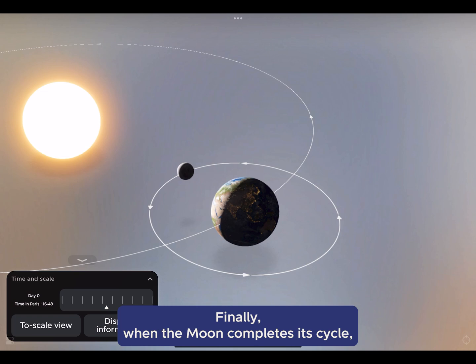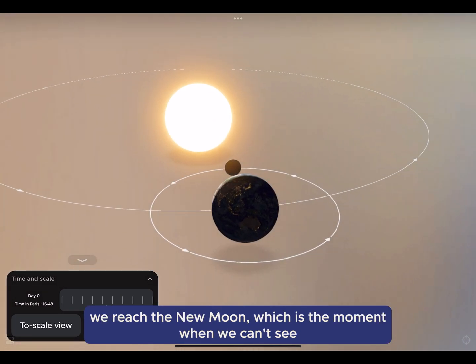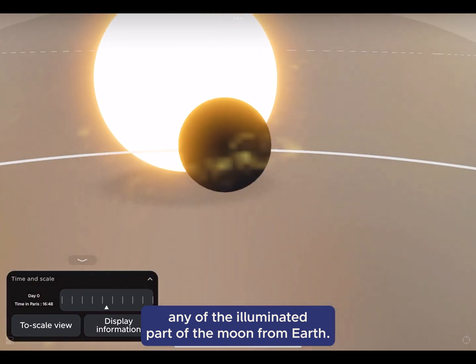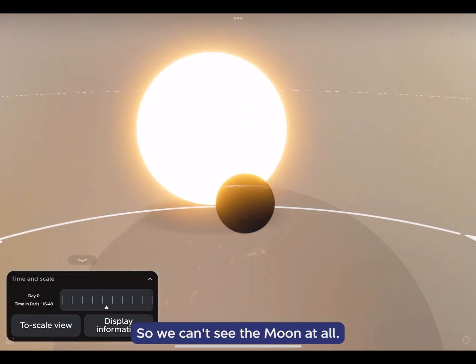Finally, when the Moon completes its cycle, we reach the New Moon, which is the moment when we can't see any of the illuminated part of the Moon from Earth. So we can't see the Moon at all.